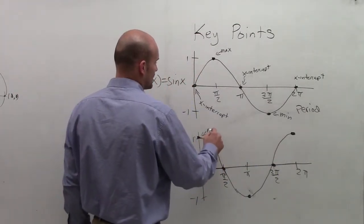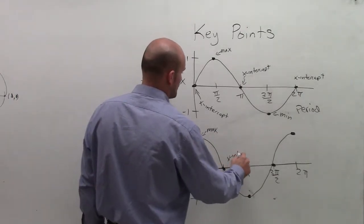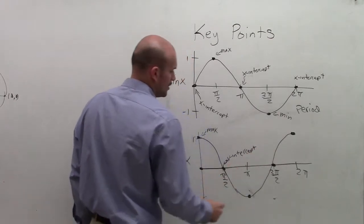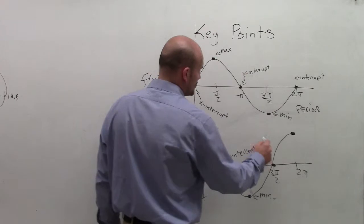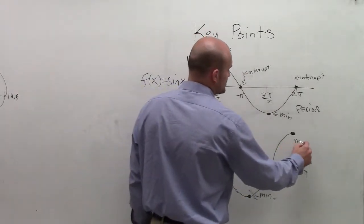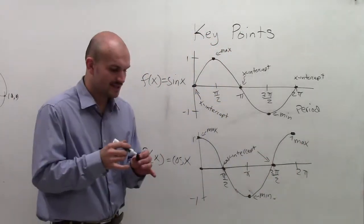So we can say here we're actually going to have a maximum value. We're going to have an x-intercept at π/2, we're going to have a minimum value at π, another x-intercept at 3π/2, and then a completion of our cycle and a max value at 2π.